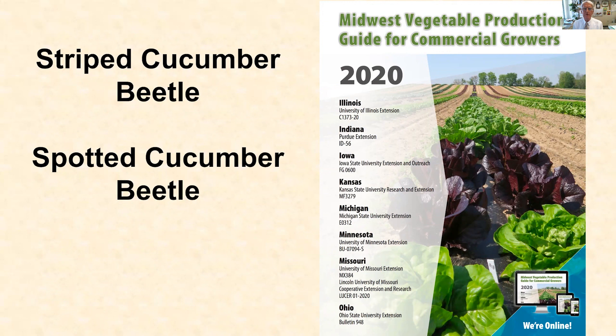The vegetable production guide for the Midwest has a long list of insecticides that can be used — some organic, some traditional, and some restricted use. Make sure you're reading and following label directions for whichever product you choose. Consult the latest version of the guide for insecticides to control striped and spotted cucumber beetles in spring, and again for rind feeding in the fall. Thank you for your time and attention. We'll be back to talk about another pest soon.